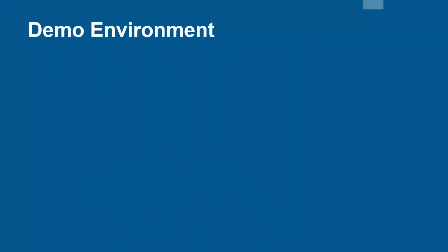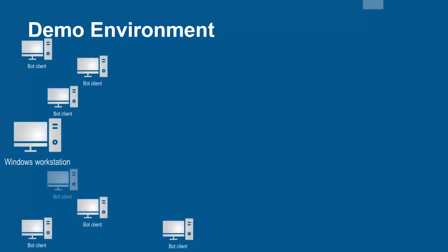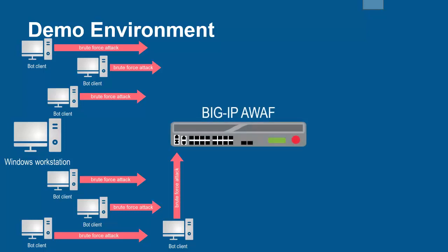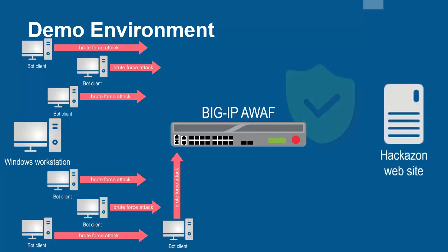The environment for this demo contains three devices. A Windows workstation will be used to simulate a botnet, which will be used to submit brute force attack requests from multiple IP addresses. These requests will arrive at the F5 BIG-IP system running Advanced WAF. The BIG-IP system sits in front of, and protects, the backend web application.